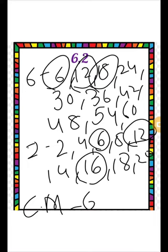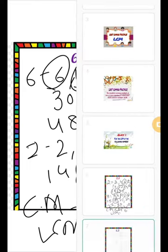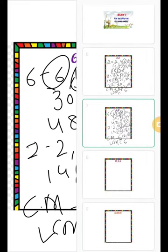Now, which is the least multiple? The least multiple is 6, so your LCM is 6. See the next question.